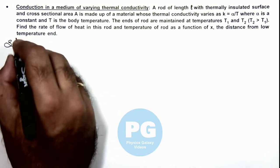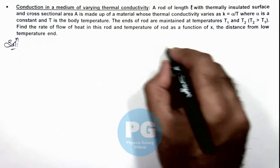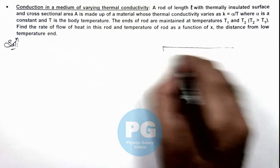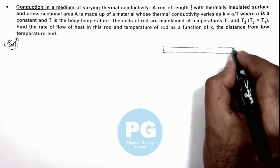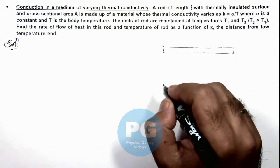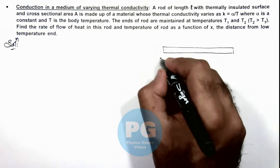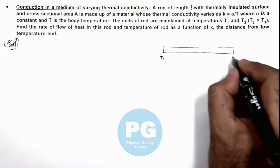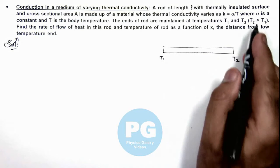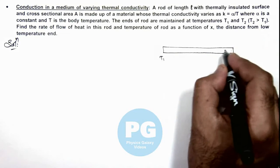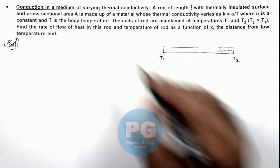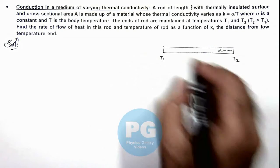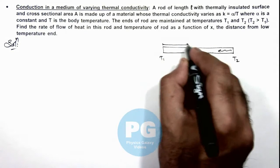So here in analysis, if we draw the situation where we are given that this is a rod in which if temperature of one end is T1, other is T2, where it is given that T2 is greater than T1, so heat will be flowing from high temperature end to low temperature end. And from low temperature end at a distance x,